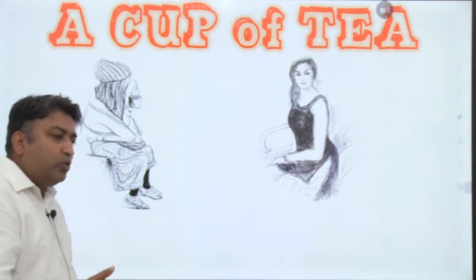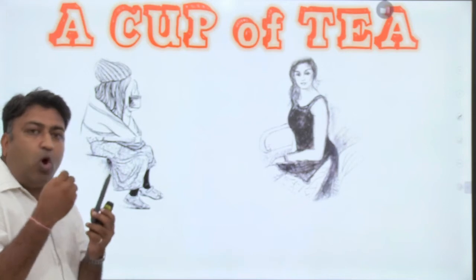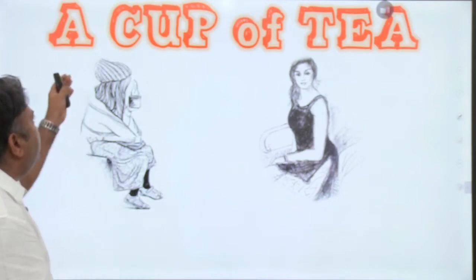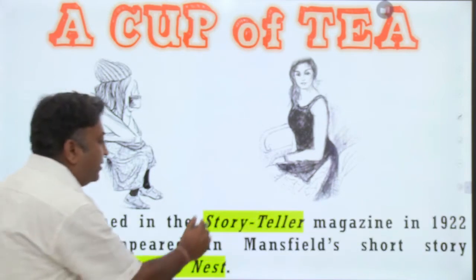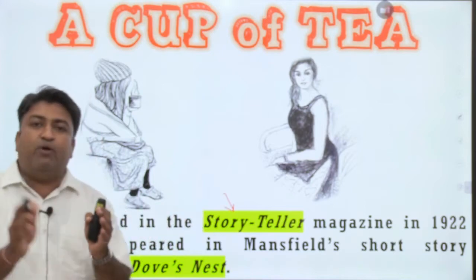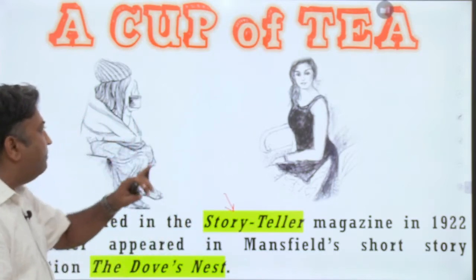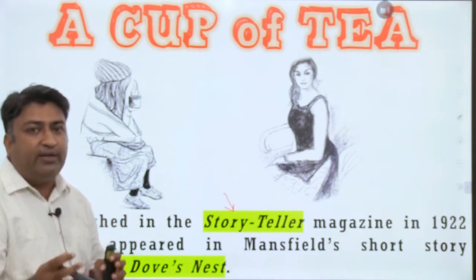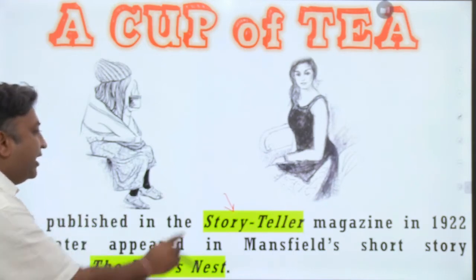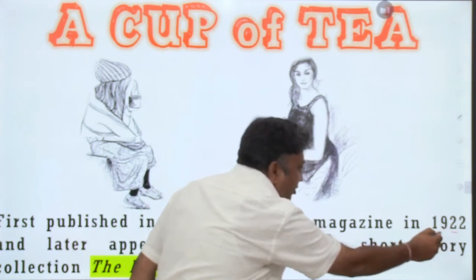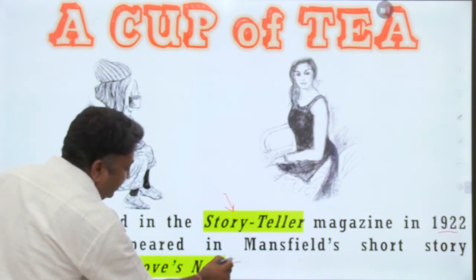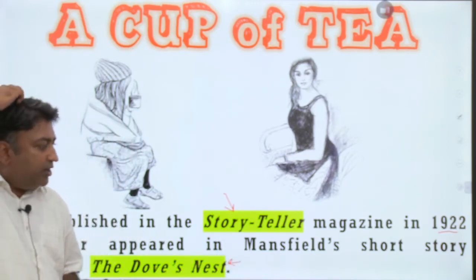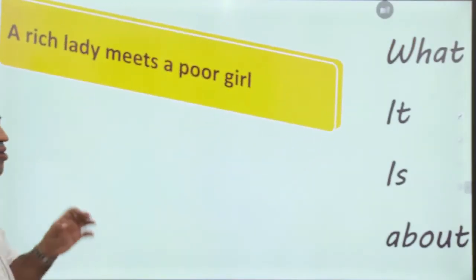This story is part of curriculum in almost all Western and Eastern universities. The name of the story is 'A Cup of Tea.' It was first published in the magazine 'The Storyteller.' It was also published in 1922 and later appeared in her short story collection 'The Dove's Nest,' another collection by Katherine Mansfield.